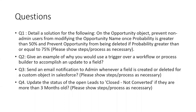The first question says: on the Opportunity object, prevent non-admin users from modifying the opportunity name once probability is greater than 50%, and prevent opportunities from being deleted if probability is greater than or equal to 75%. For this, I split the question into two parts. The first part — preventing name modification — I handled with a validation rule, and the second part — preventing deletion — could not be done with configuration, so I used a trigger.